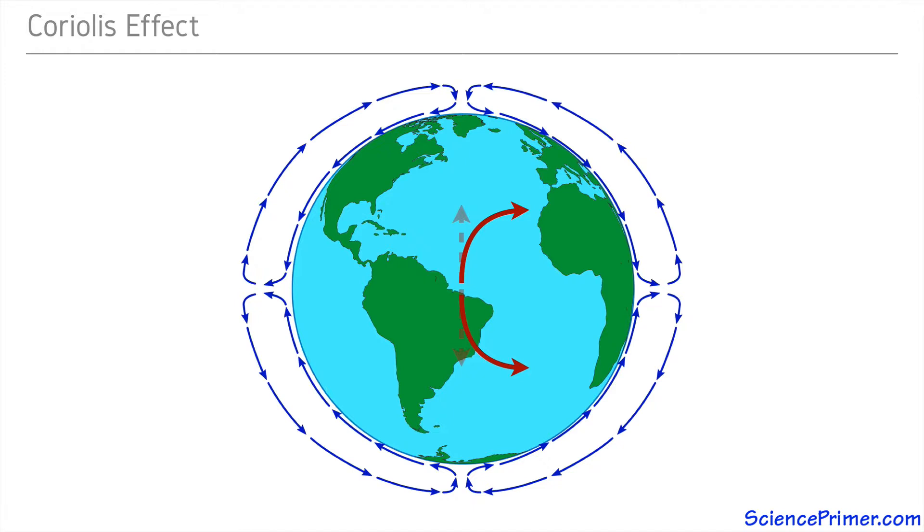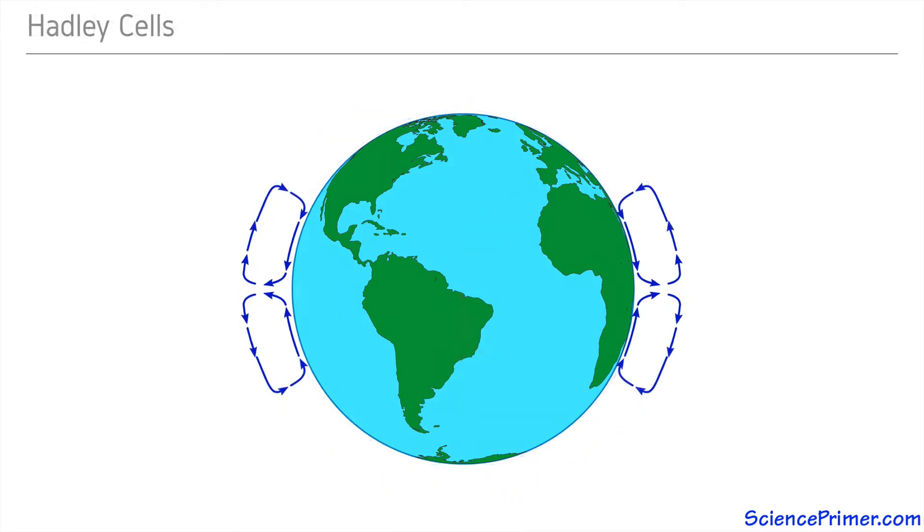The convection cells formed by the warming of air at the ground near the equator end at roughly 30 degrees north and south latitude. This convection cell is called the Hadley cell, after George Hadley, an English scientist, who proposed some of the mechanisms of atmospheric circulation as we understand them today.